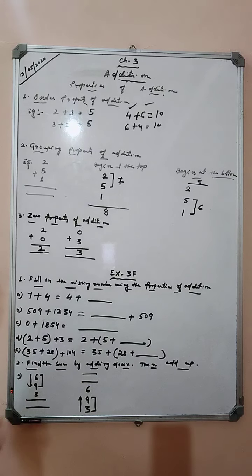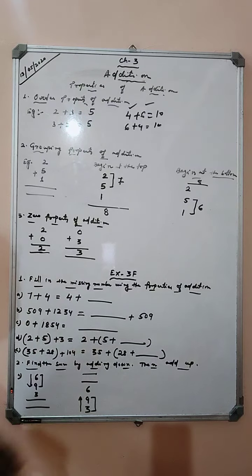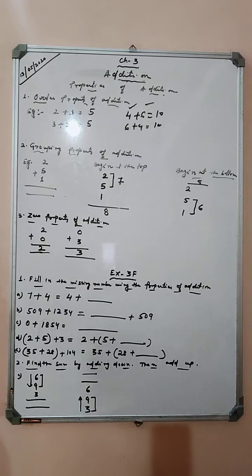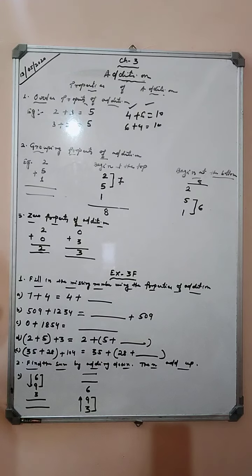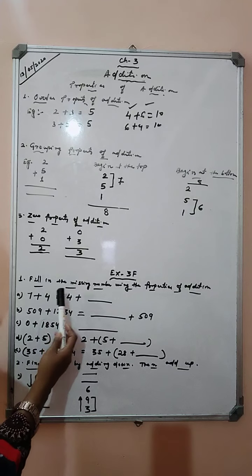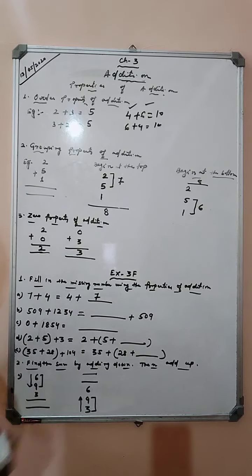I think these properties are clear to you students. Now let us see exercise 3F. Fill in the missing numbers by using the properties of addition. We have learnt the properties of addition, and by using these properties we have to fill in the blanks. Our first question is 7 plus 4 equals to 4 plus blank — the answer is 4 plus 7. This is the order property.